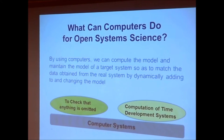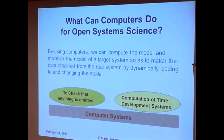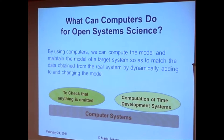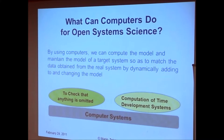Let us think about what computer systems can support the methodology of open system science. Computers are good at database and computing. We can preserve all data and findings in a database and use it to check that nothing is omitted. We can also use it to check whether any new findings support our propositions or give contradictions. We can use computers to compute time-developmental systems — by using computers, we can compute and maintain the model of a target system so as to match the data obtained from the real system by dynamically adding to and changing the model.